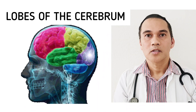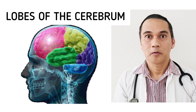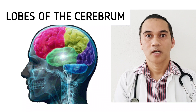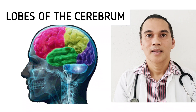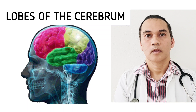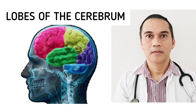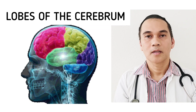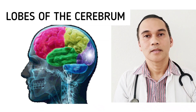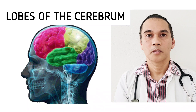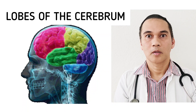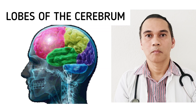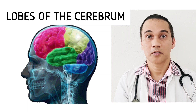Now let's talk about the lobes of the cerebrum. We have the frontal lobe, which is shown in pink; the parietal lobe, yellow; the occipital lobe, purple; and the green is the temporal lobe. The blue at the bottom is the cerebellum.